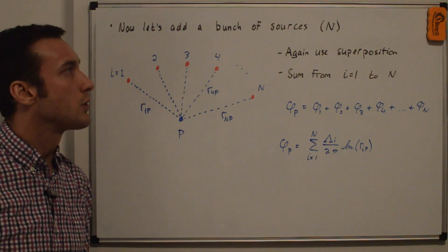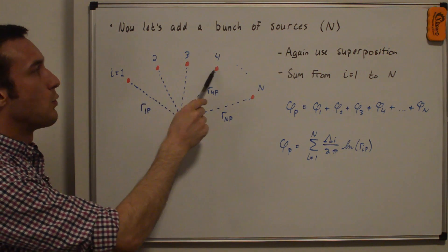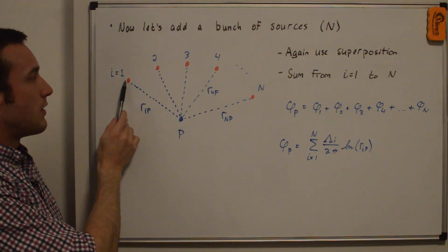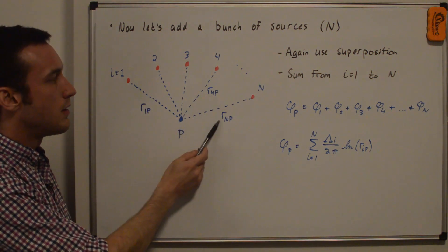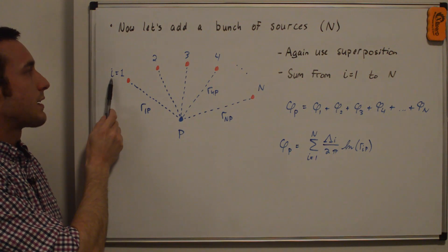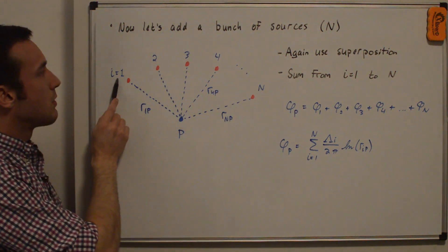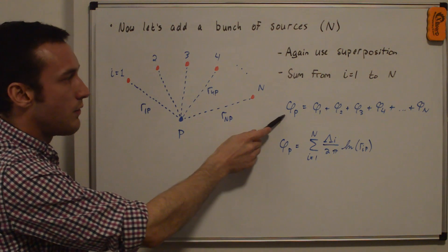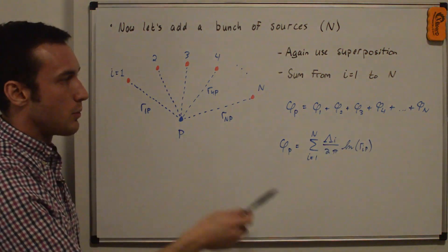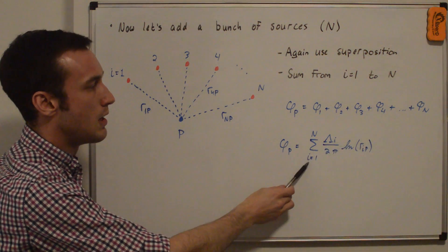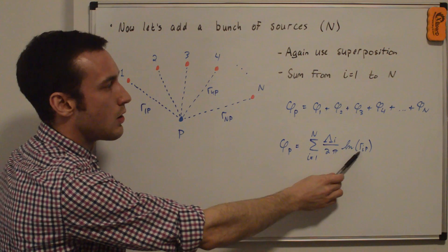The next logical step is to add a bunch of sources — n sources. You can see source one, two, three, four, all the way to n. The distance between these sources and point P is r_1P, r_4P, and r_nP. We'll index these sources with the letter i. Using superposition and summing from i equals one to n, phi_P is equal to a summation from i equals one to n of lambda_i over two pi times the natural log of r_iP.